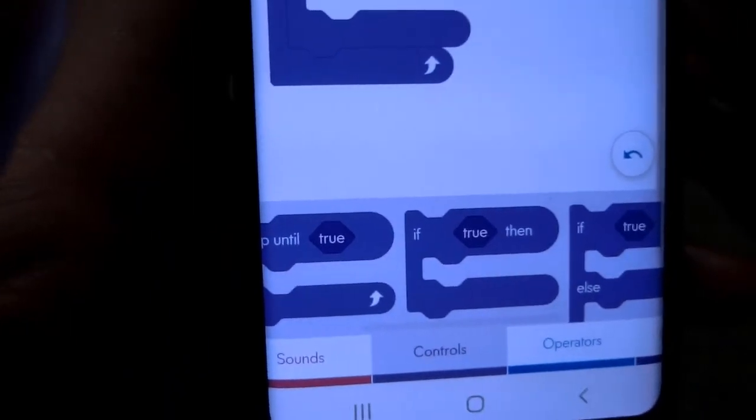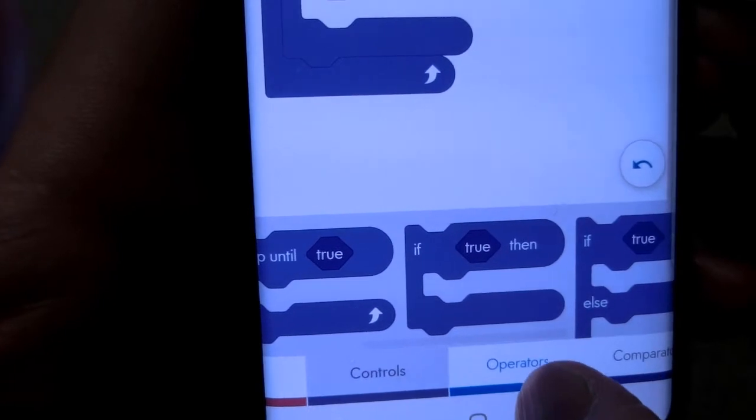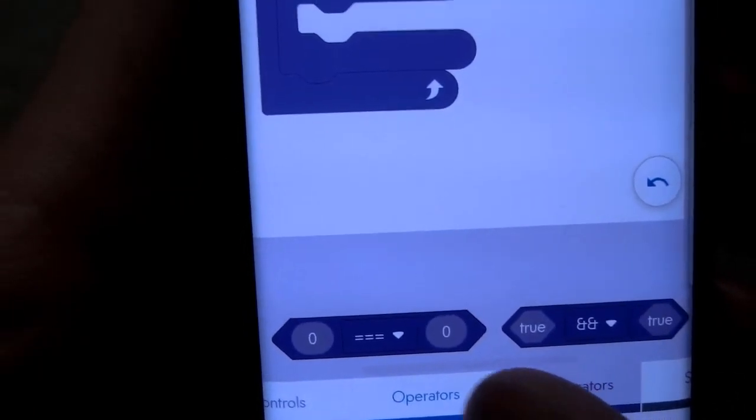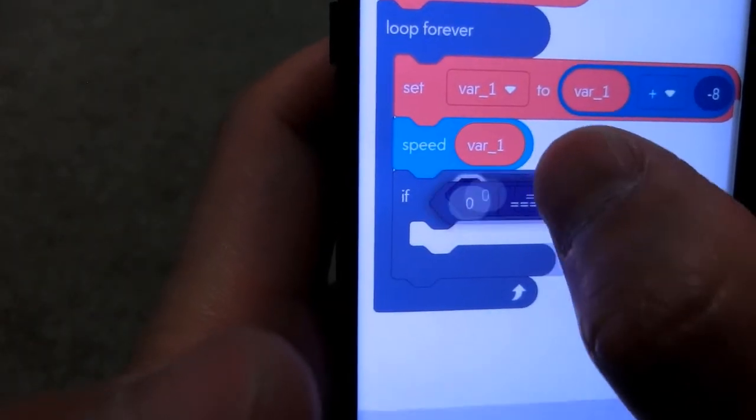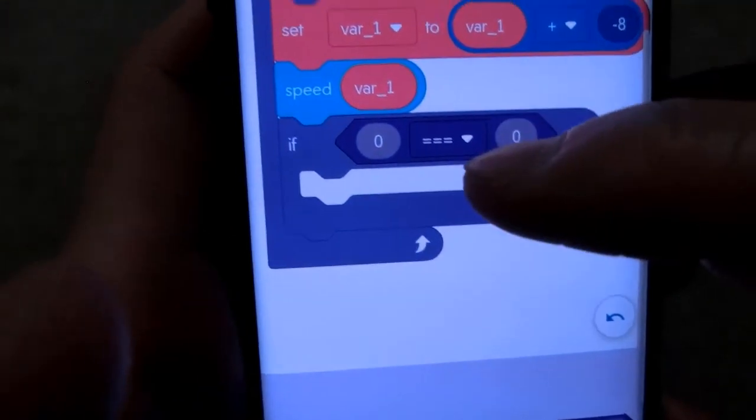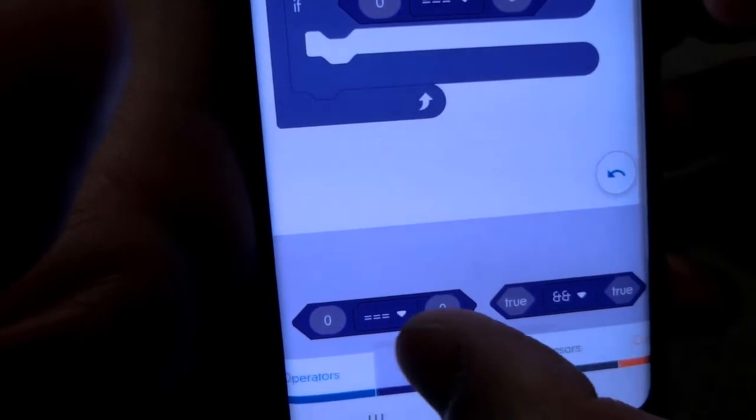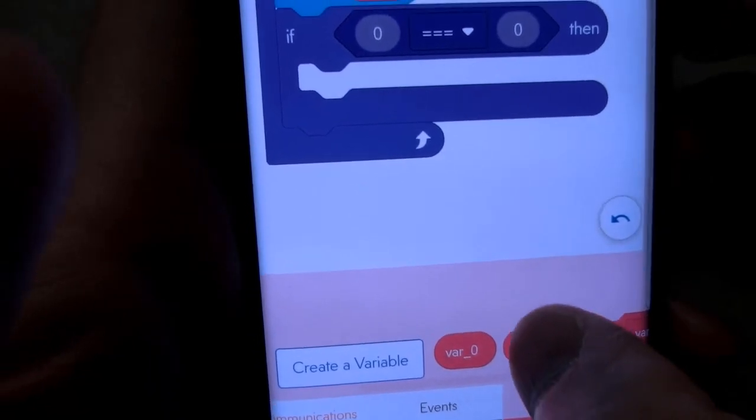Since I just mentioned comparison, you need a comparator here. Go to comparators and put it on the first line of the if statement. So if variable 1 is larger than, for example, 100, let's find variable 1 first.